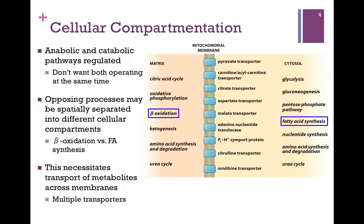Of course, if we have processes in different compartments, that necessitates transporting metabolites across membranes. For that reason, we have multiple transporters. Here is a figure from your book illustrating many of the types of transporters that are needed because of this situation. You are only responsible for those transporters that we've already considered.